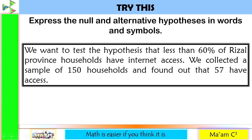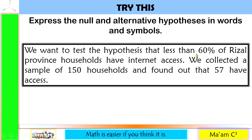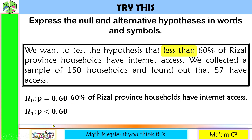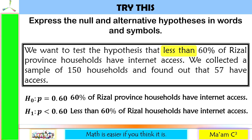Try this: express the null and alternative hypothesis in words and symbols. We want to test the hypothesis that less than 60% of Rizal province households have internet access. We collected a sample of 150 households and found that 57 have access. The null hypothesis is H sub 0: P is equal to 0.60. The keyword is 'less than,' so the alternative hypothesis is H sub 1: P is less than 0.60. In words: null — '60% of Rizal province households have internet access'; alternative — 'less than 60% of Rizal province households have internet access.'